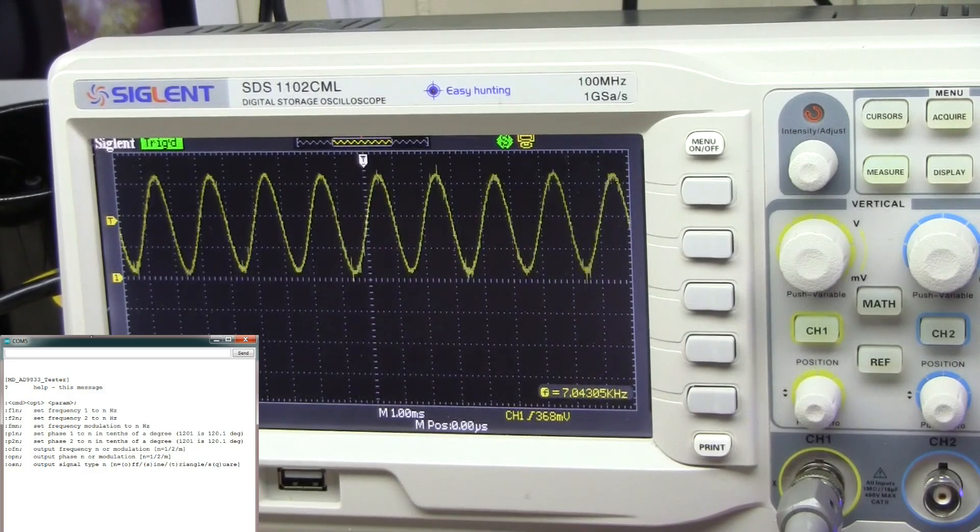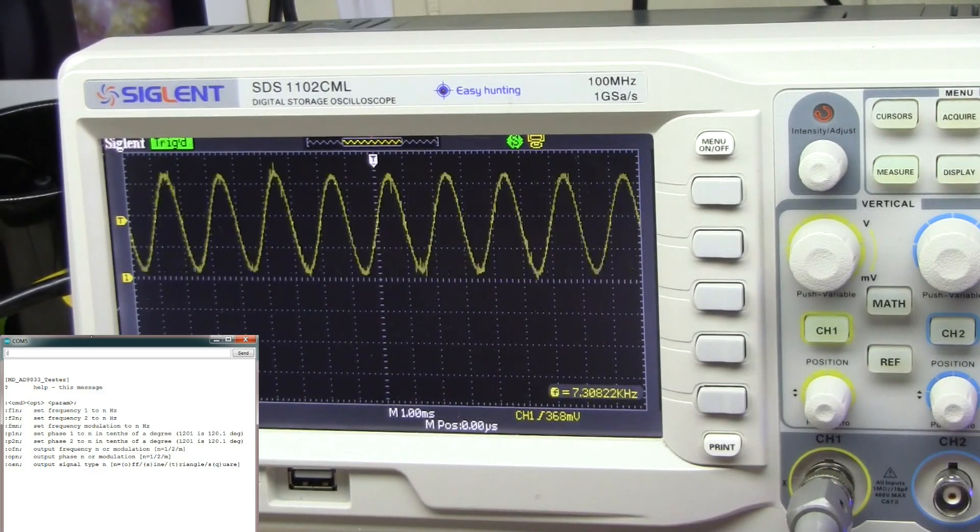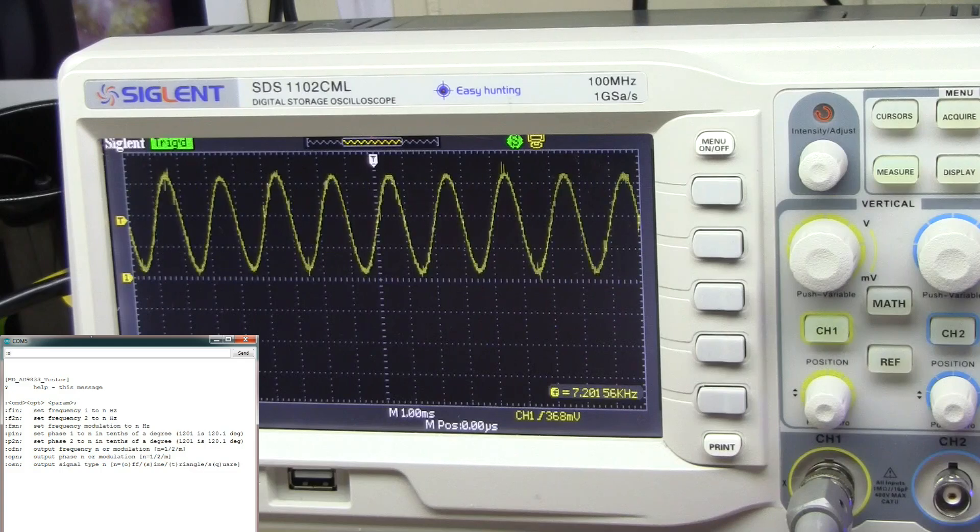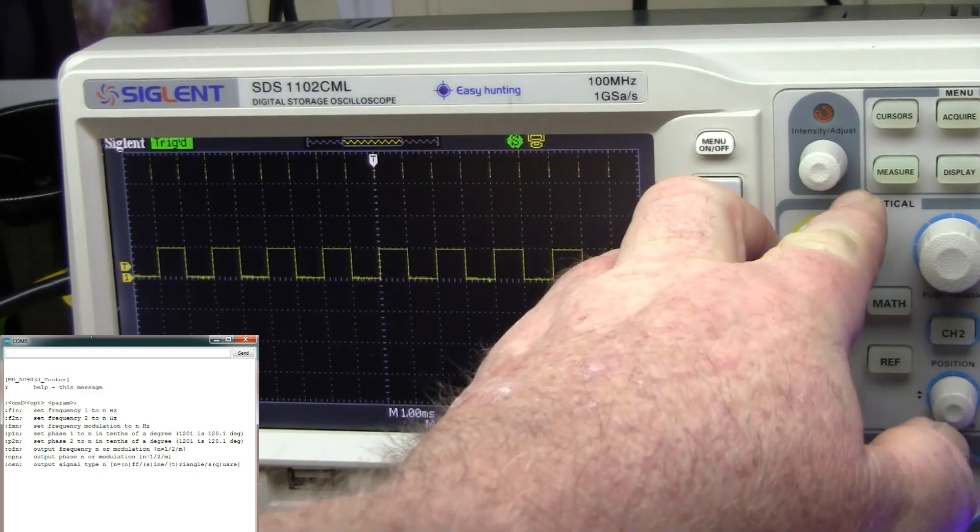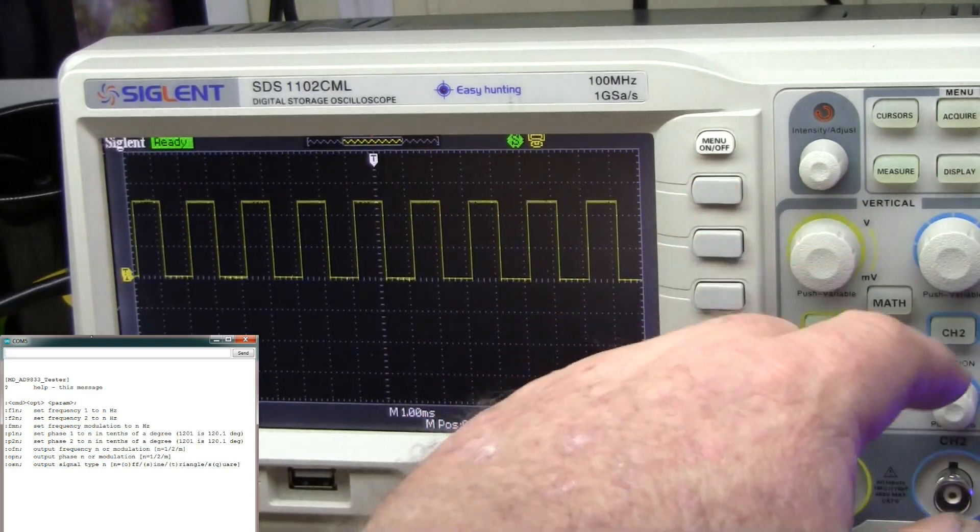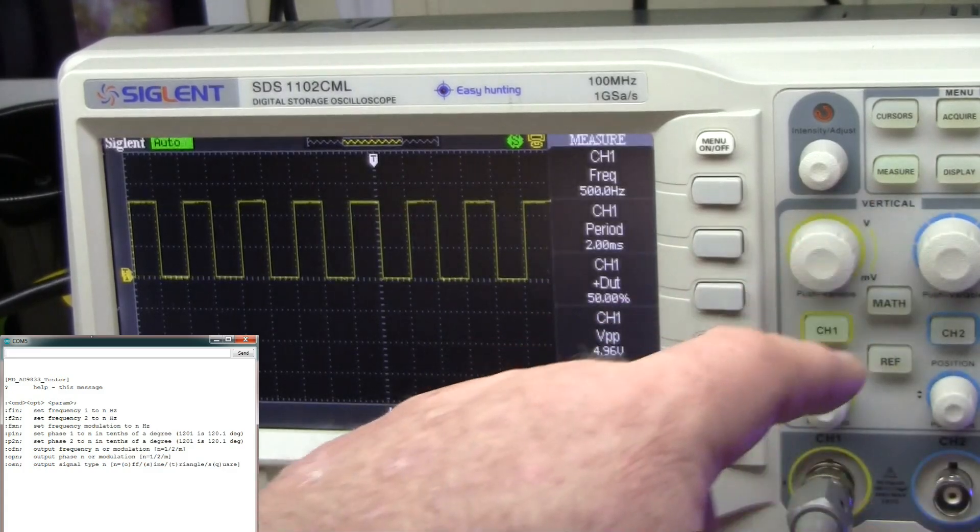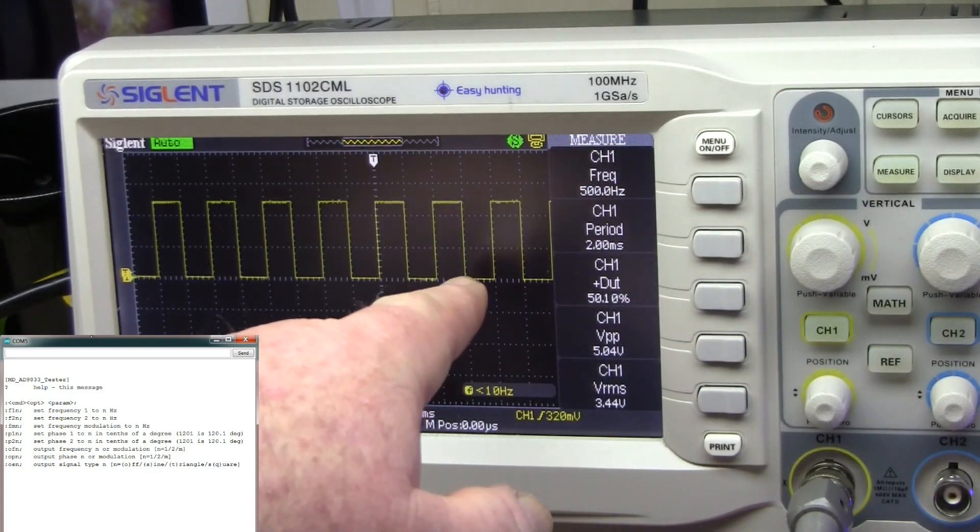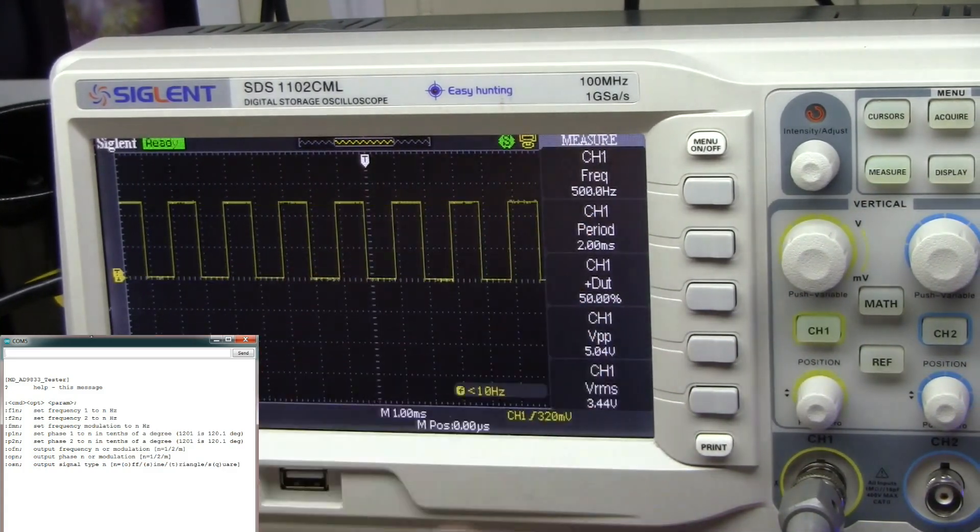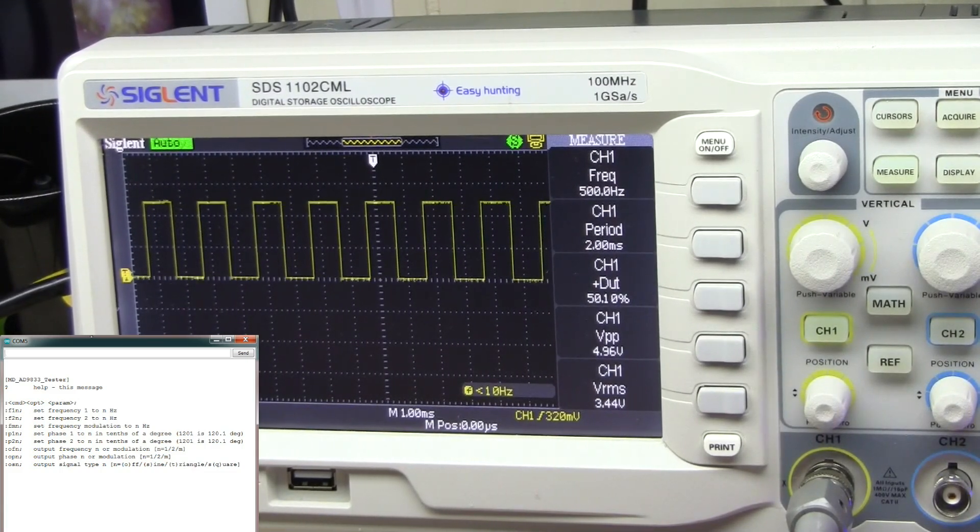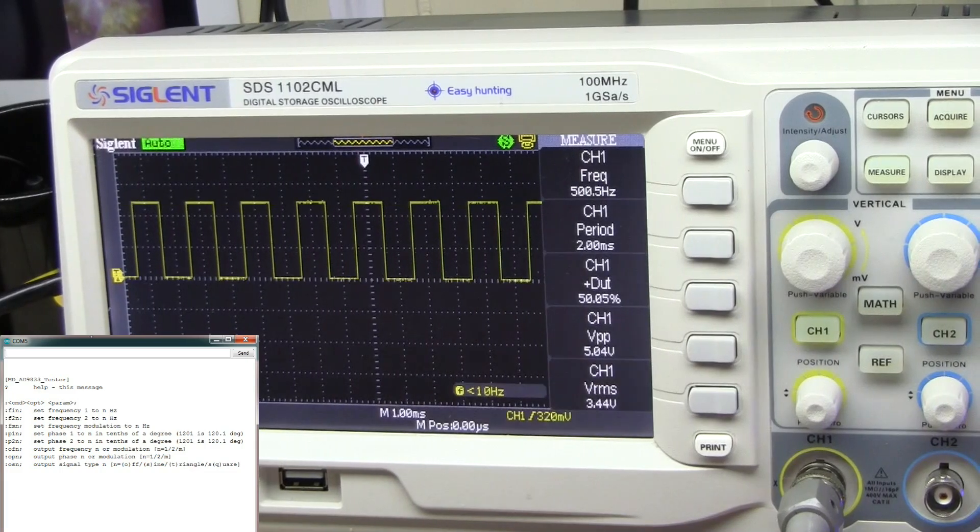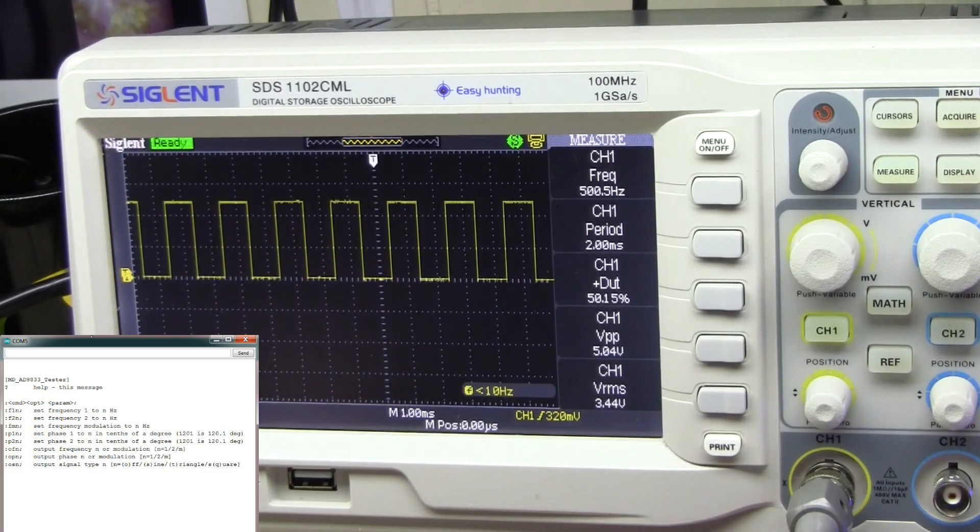Because if I go to the square wave, it does not seem to be an issue. Well, now we're getting a little bit of jumpy, but we're only changing a half a hertz, which is kind of acceptable. I don't know why it's doing this. That's the whole point. That's what I'm trying to figure out here.